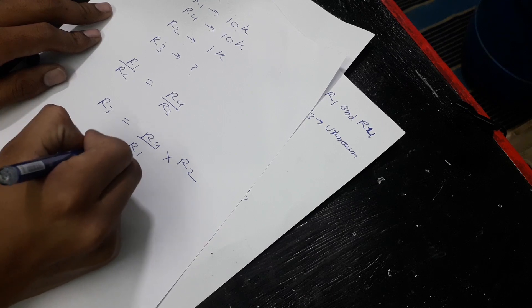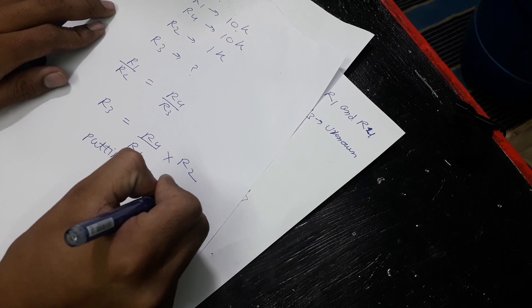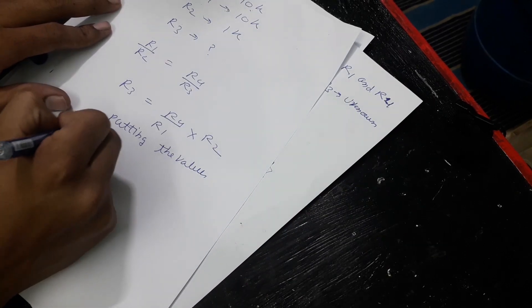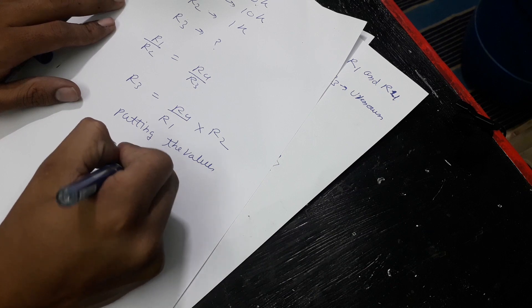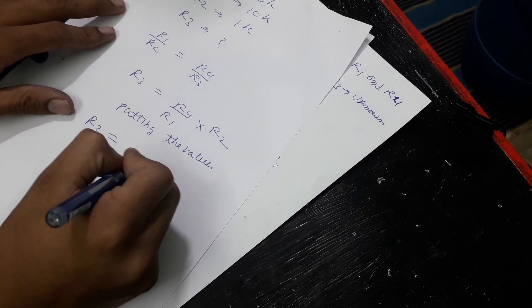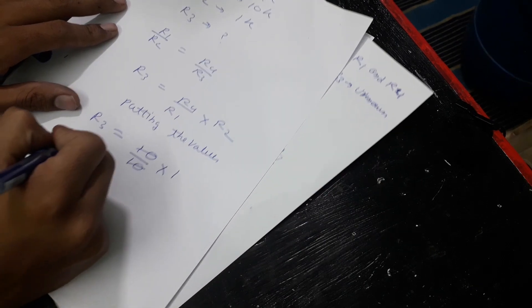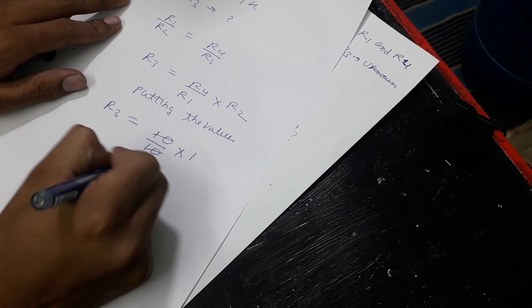Now putting the values into the formula, the R3 resistance comes out to be 1k ohm.